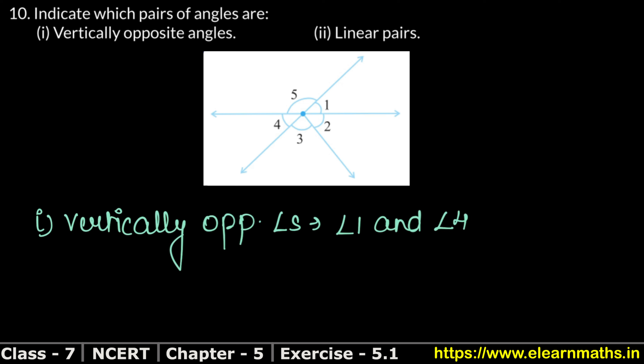Look, these two lines are intersecting. So which angles are vertically opposite? We can write here angle 5 and angle 2 and angle 3. That's why I have placed a plus here. So angle 5, angle 2, and angle 3 are vertically opposite angles.